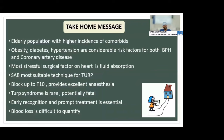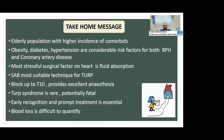Take-home message: patients with IHD coming for TURP are mostly elderly, carrying the same risk factors for BPH and coronary artery disease — obesity, diabetes, and hypertension. The most stressful surgical factor is fluid absorption. Spinal anesthesia is the most suitable technique. Block up to T10 provides excellent anesthesia. TURP syndrome, though rare, is a potentially fatal condition — early recognition and treatment are essential. Blood loss is difficult to quantify during these surgeries.